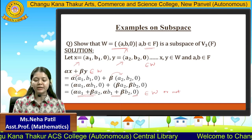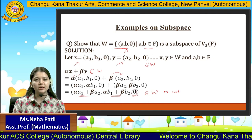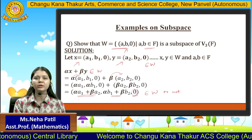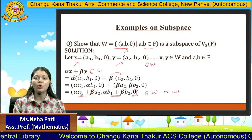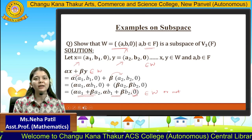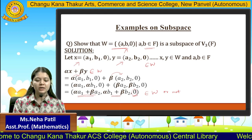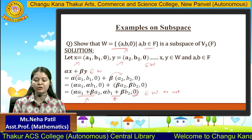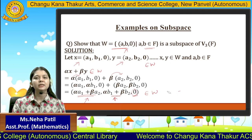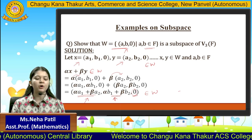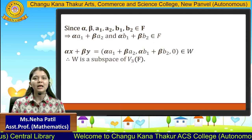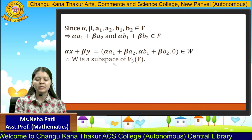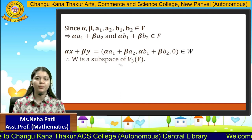We check the third coordinate, which is 0 itself. For the first two coordinates, since alpha, beta, a1, b1, a2, b2 are all scalars, their multiplication and addition will also be scalars. So the first and second coordinates are also scalars. Therefore, alpha x plus beta y belongs to W, and by the one step test, W is a subspace of that particular vector space.